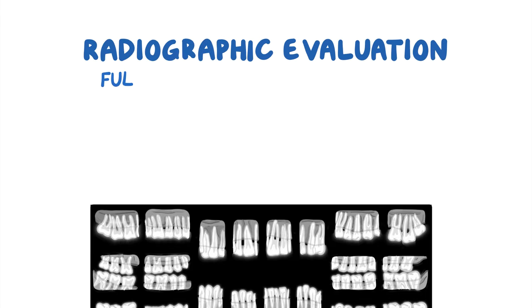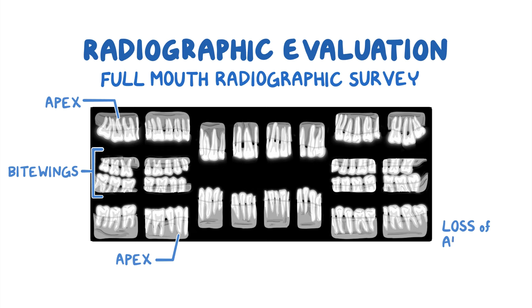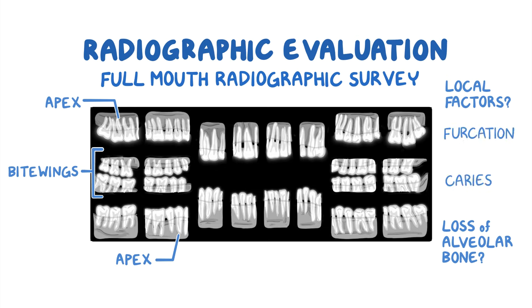After the history is taken, the next step is a radiographic evaluation with a full-mouth radiographic survey. This survey should include periapical radiographs showing the apices of all teeth and appropriate bite wings. The purpose is to identify and measure the loss of alveolar bone, and also to detect local factors that can complicate the course of periodontitis, such as caries and furcation involvement.